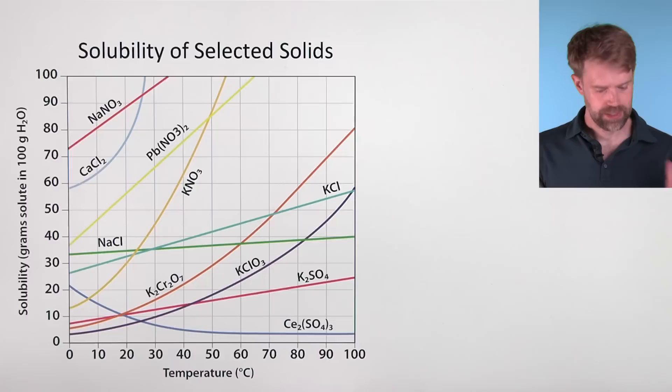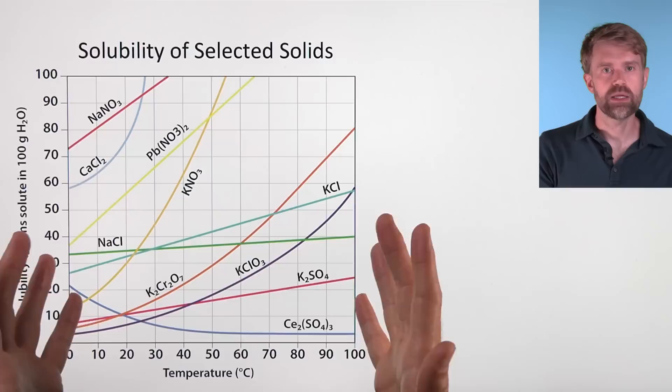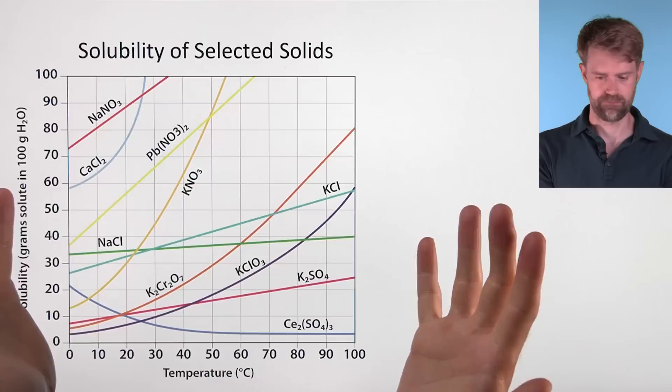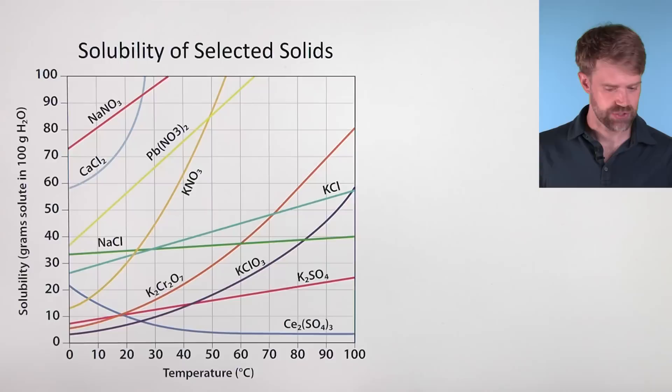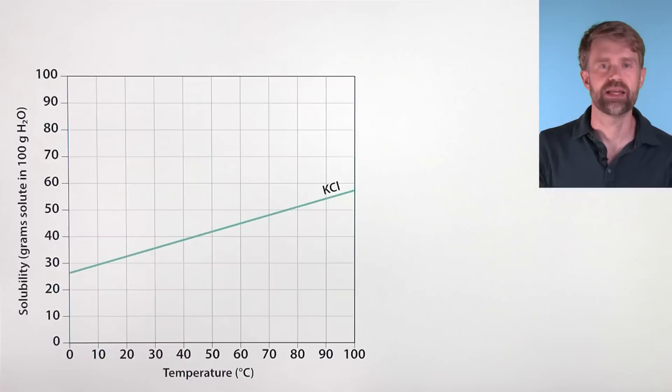All these different solutes can look confusing on one graph. But luckily, you can just focus on the curves that you need to answer a specific problem — pretend the others aren't even there. The practice problems we're going to do here are just going to focus on four different solutes, so we can ignore all the other lines. We'll start off with two problems that use only the curve for potassium chloride, or KCl.